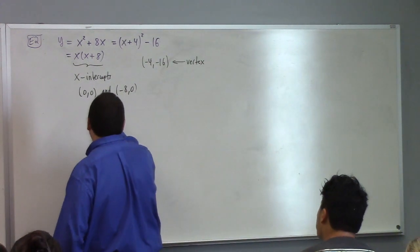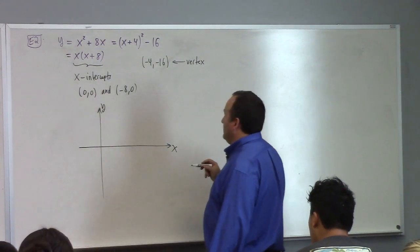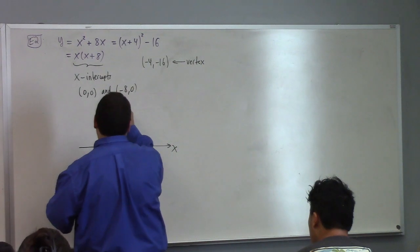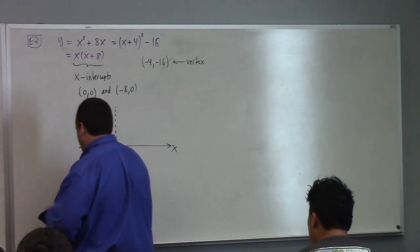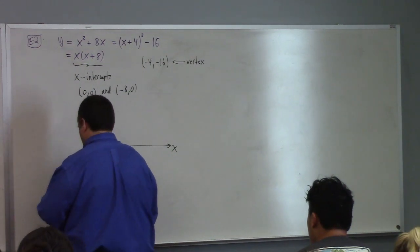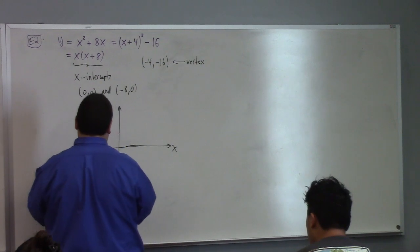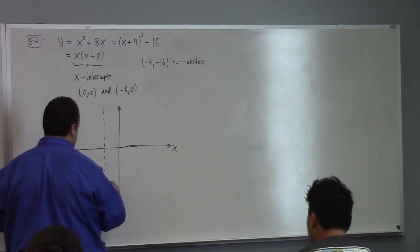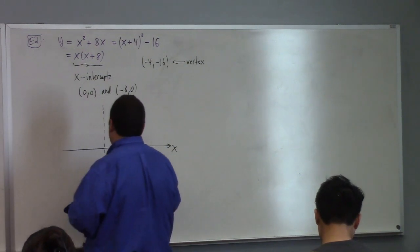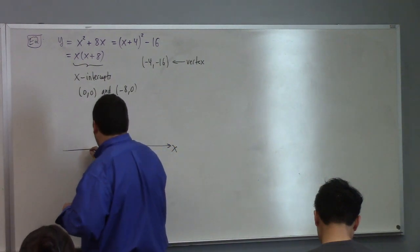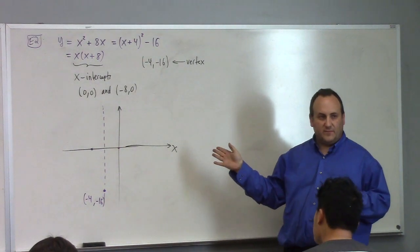This is a kind of funny parabola, isn't it, because the x-intercept is the y-intercept in this one. Well, I'm easily amused. But here it is. The vertex is at minus 4, minus 16. Let me draw a dotted line. Sometimes it's helpful to draw a dotted line on the axis of symmetry.